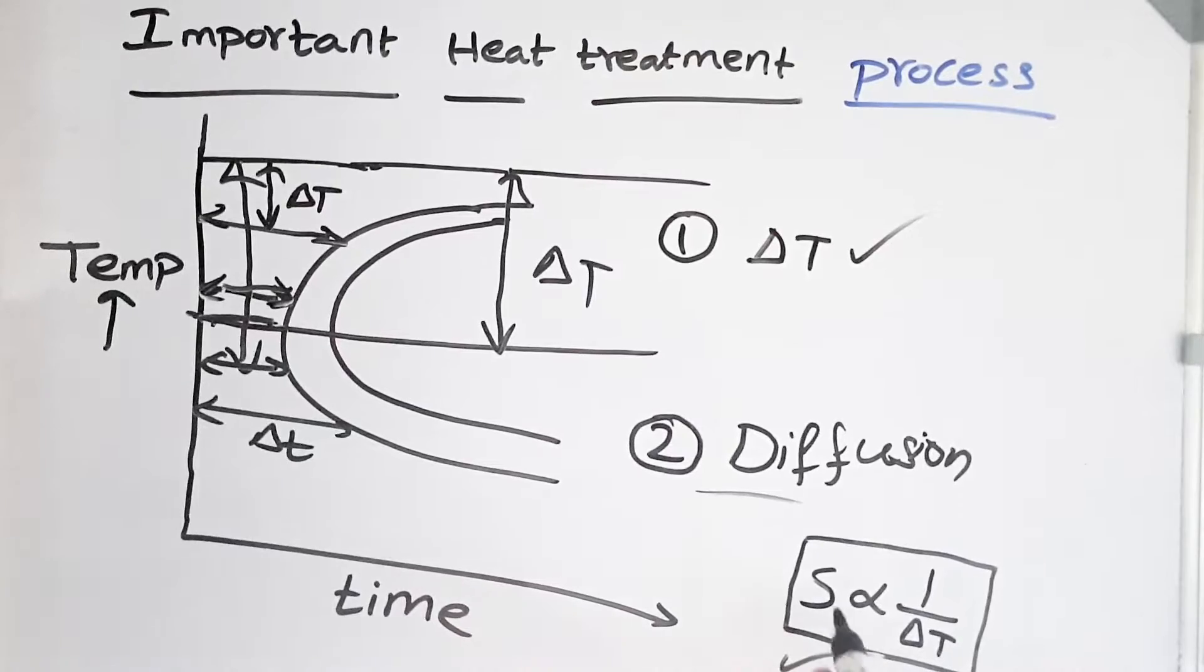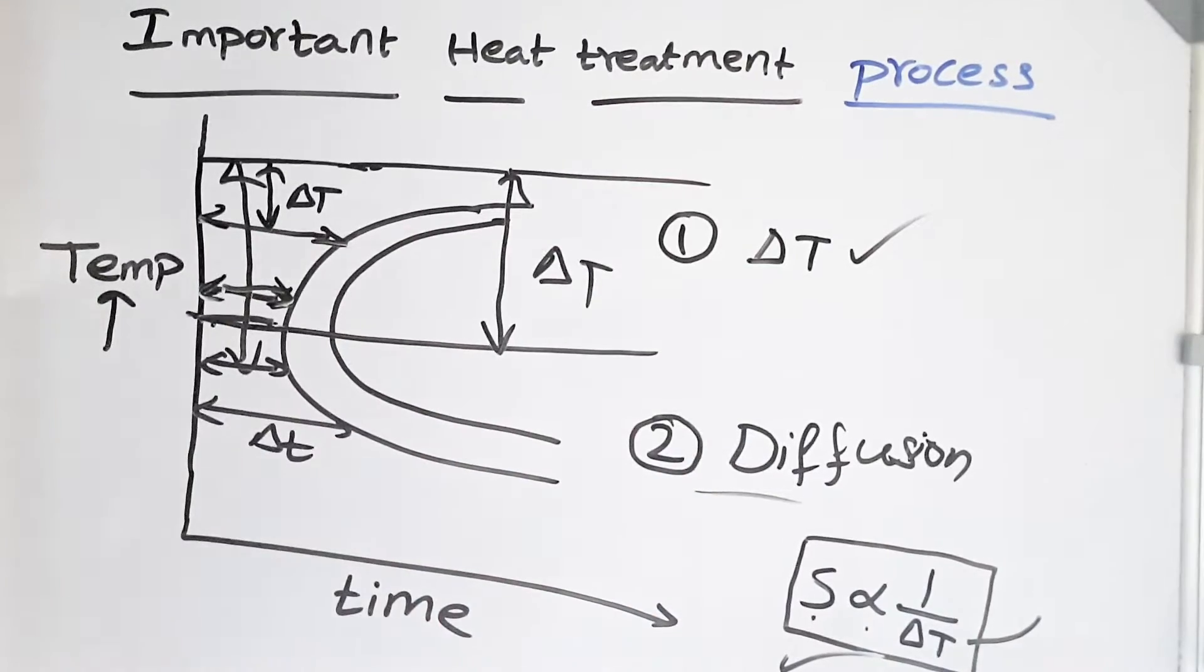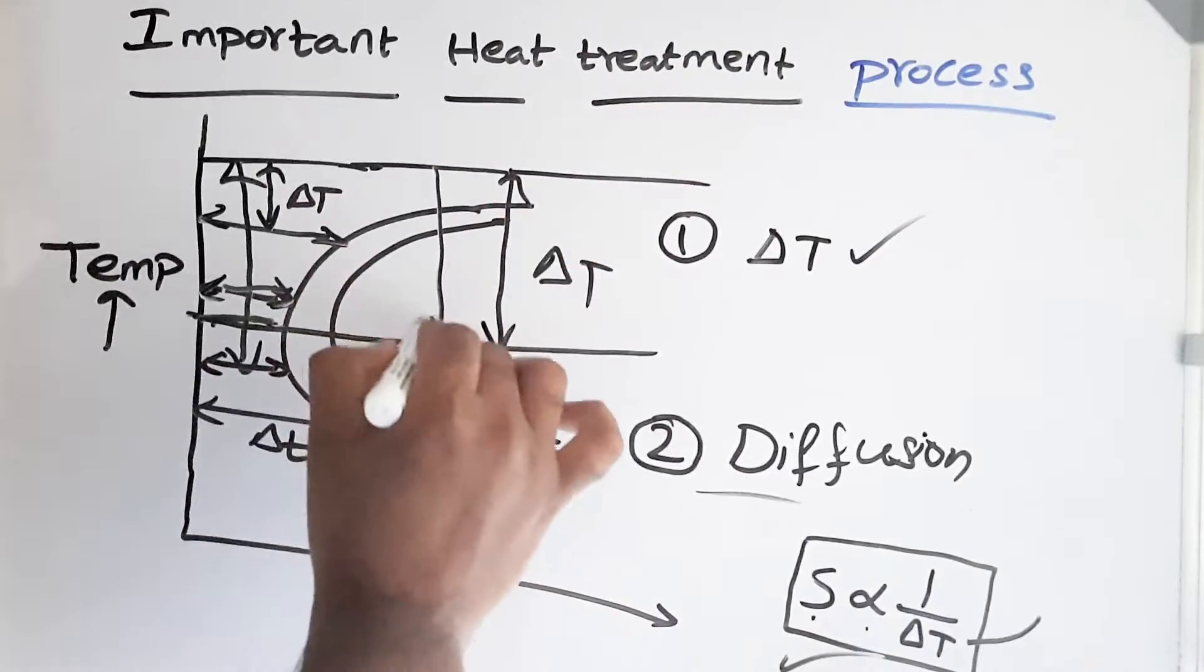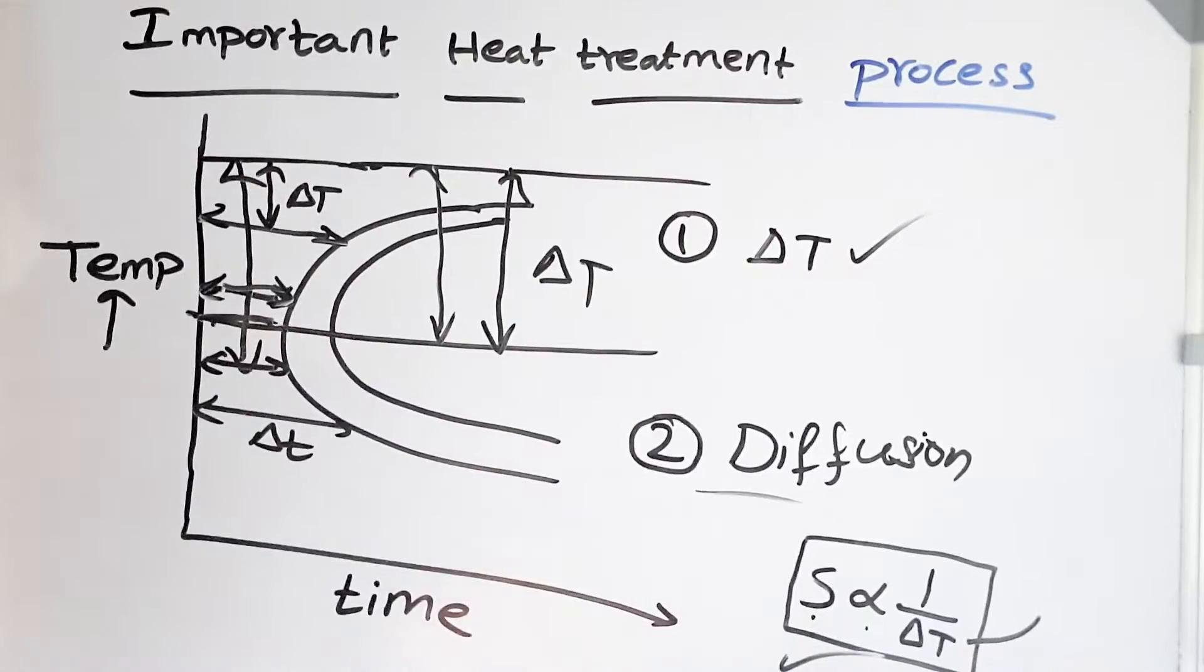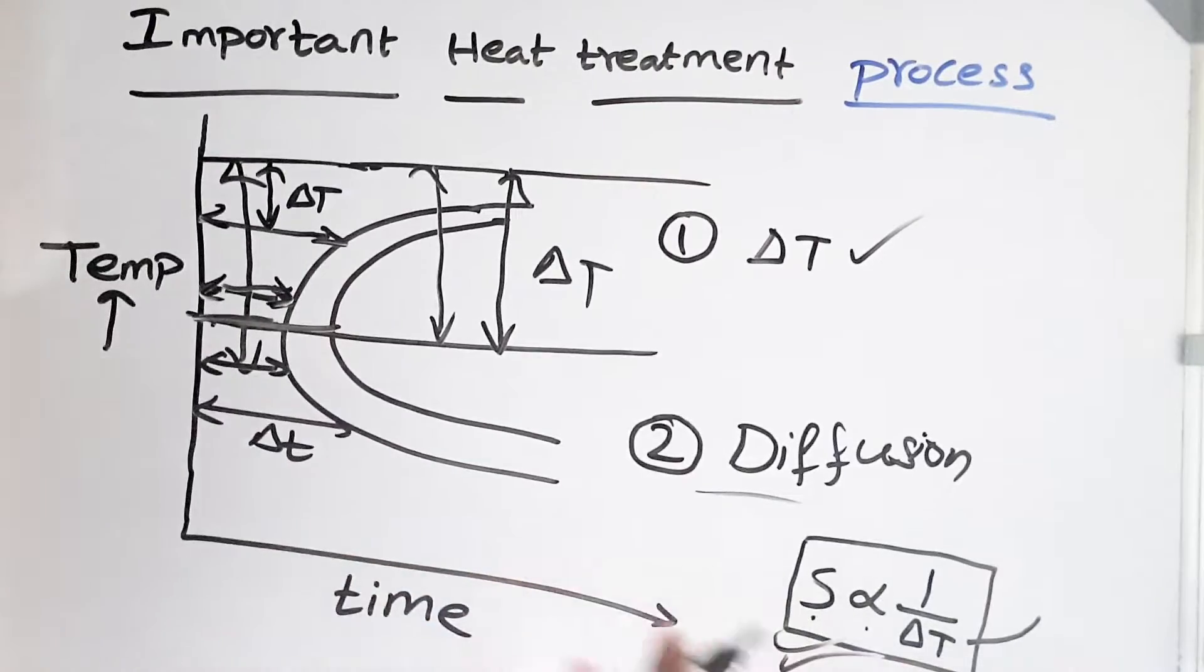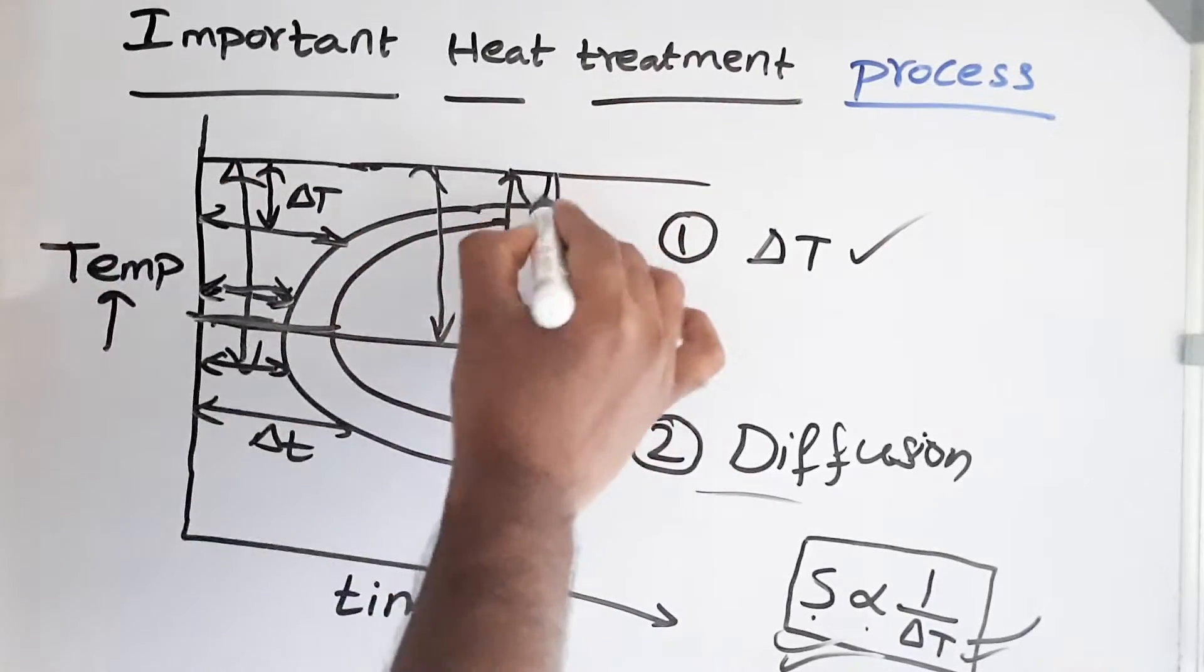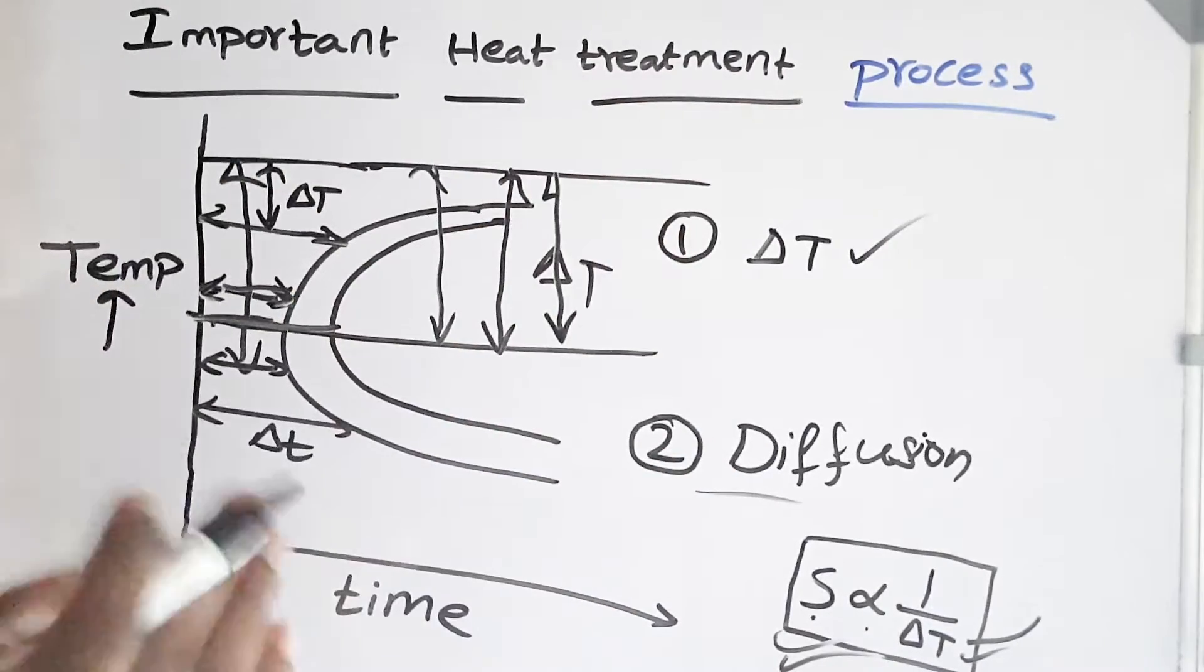So if we look at the general equation, interlamellar spacing proportional to 1 by delta T is applicable until the nose of our TTT curve. Whenever we say interlamellar spacing is inversely proportional to the delta T, we presume we are in this area because it is difficult to produce such a higher cooling rate for plain carbon steels which will make us go to a temperature below the nose of C. So in general, whenever we say higher undercooling, delta T means undercooling. Higher undercooling, finer structure, we always presume we are in this region, the upper part of our TTT curve.